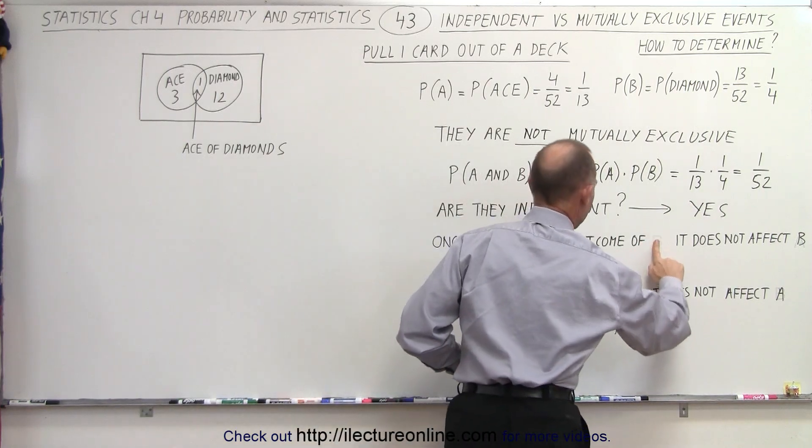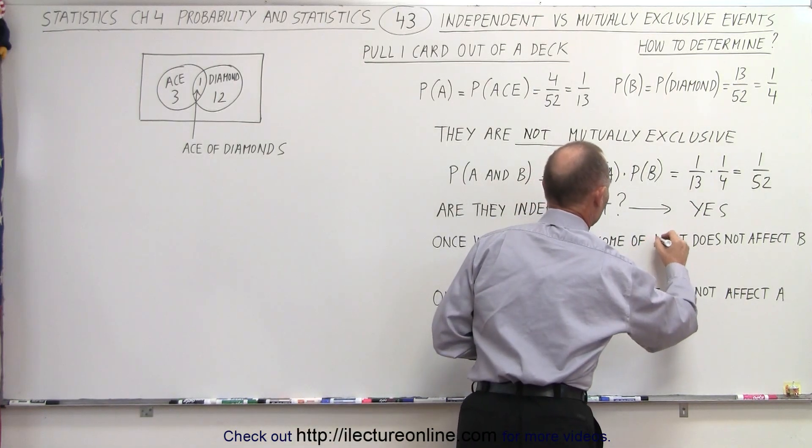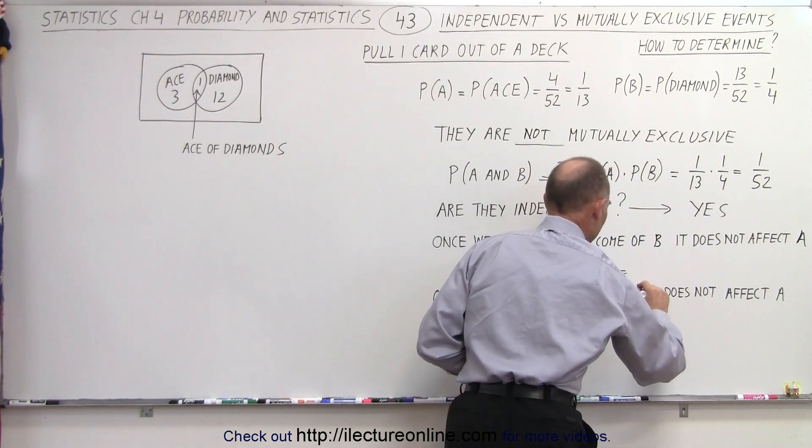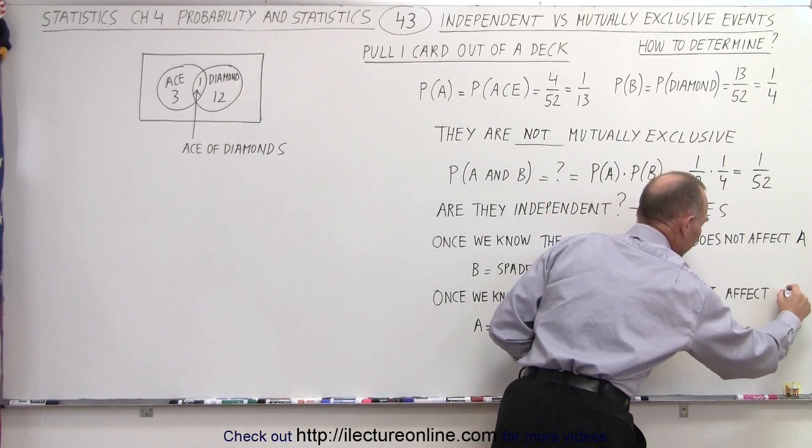Once we know the outcome of B, it will not affect A. So let me turn this around. And then here, let's call this A and B. I think that would be better.